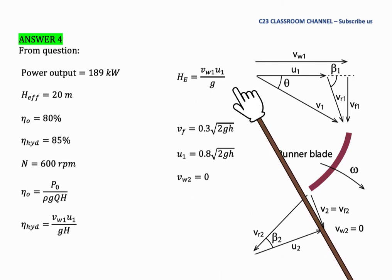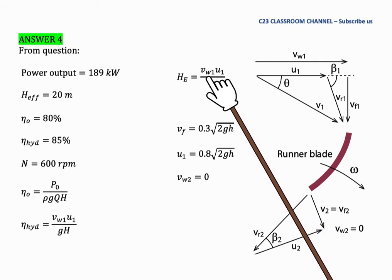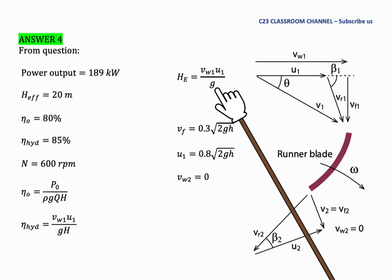This is the equation for Euler head. It can be reduced into V1U1 over g because the value of Vw2 here is equal to 0.